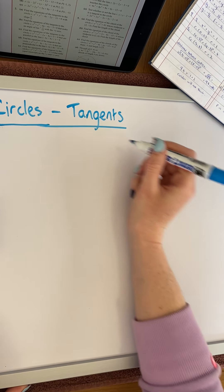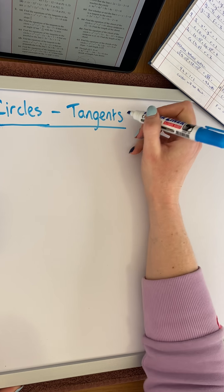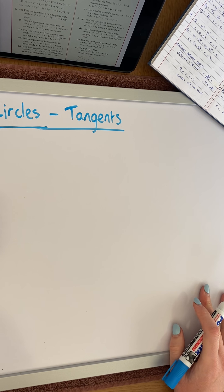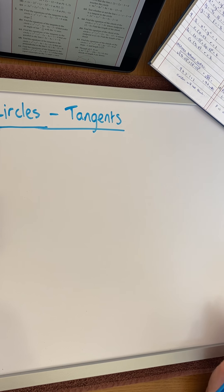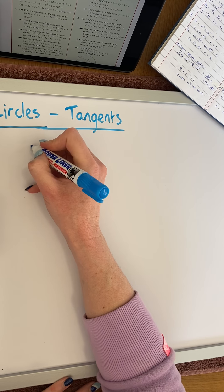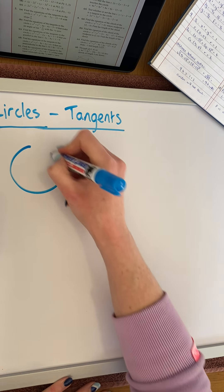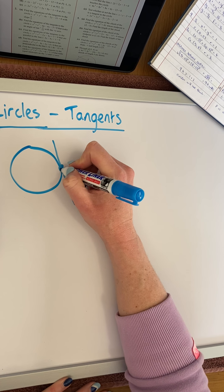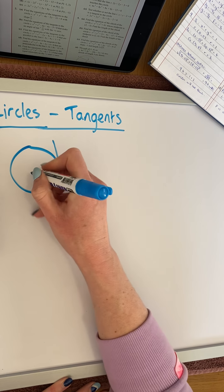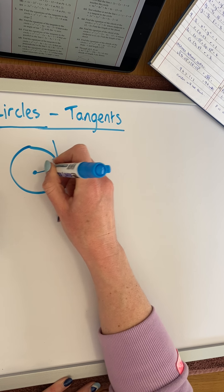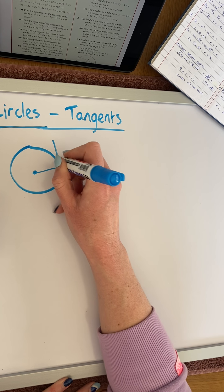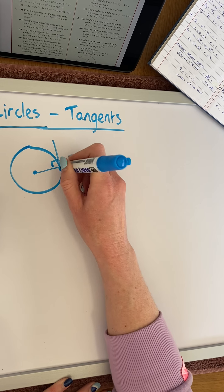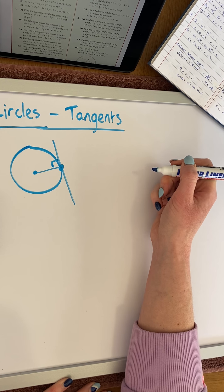In this video, we're going to look at lines connected to circles, and the first type of line we're going to look at is a tangent. A tangent is a line that touches a circle at one point only, and the important thing is that the radius is perpendicular to the tangent at the point of contact.